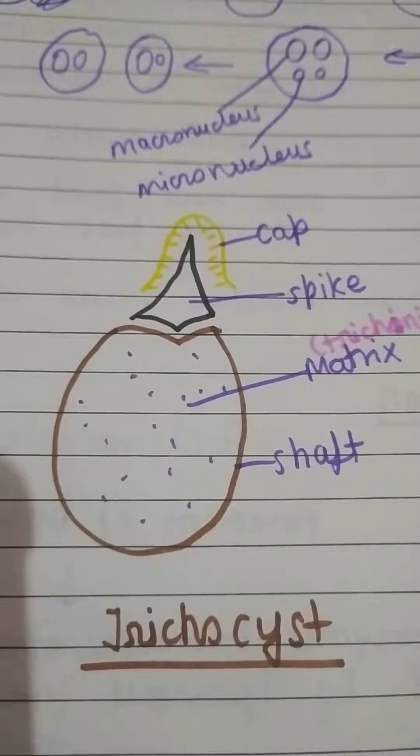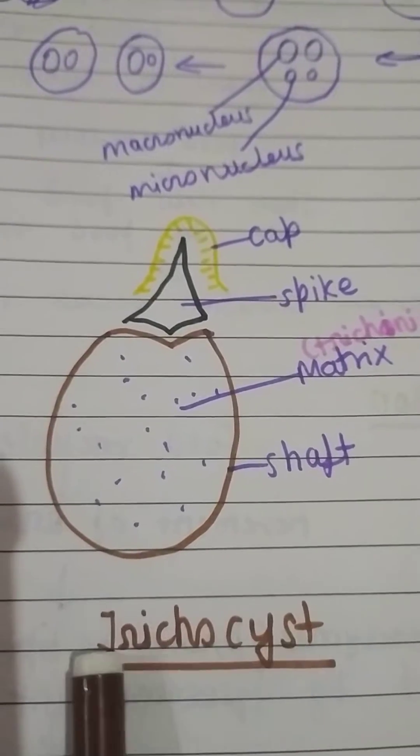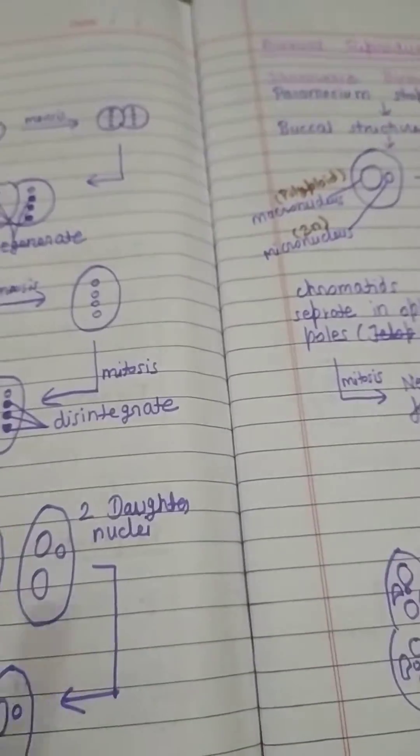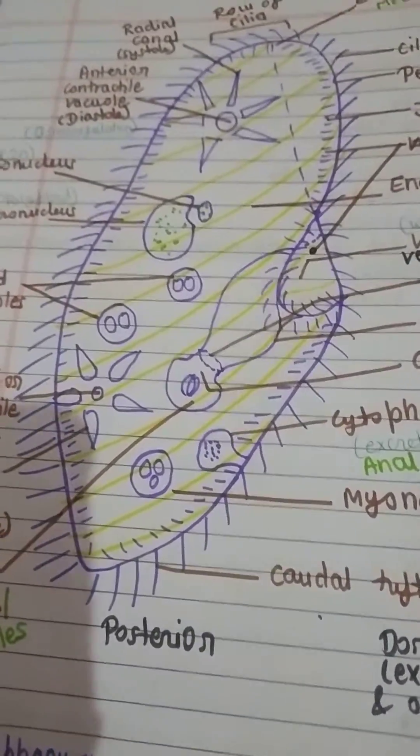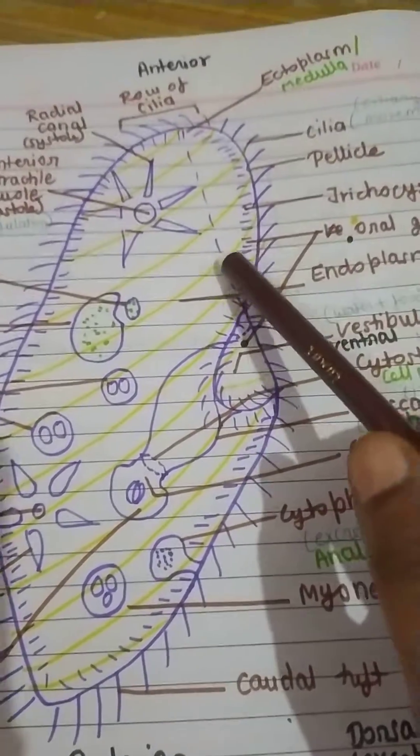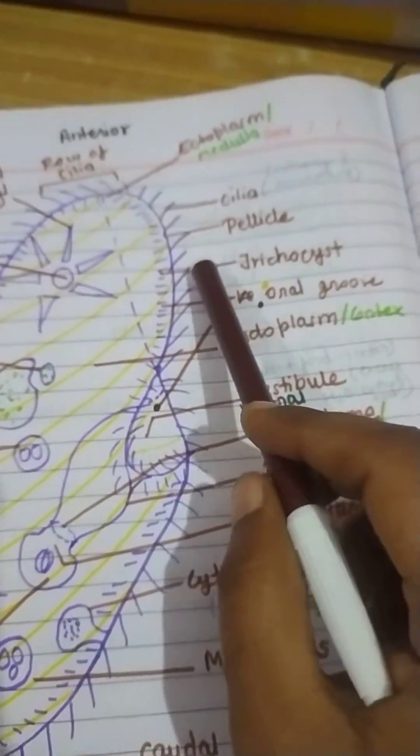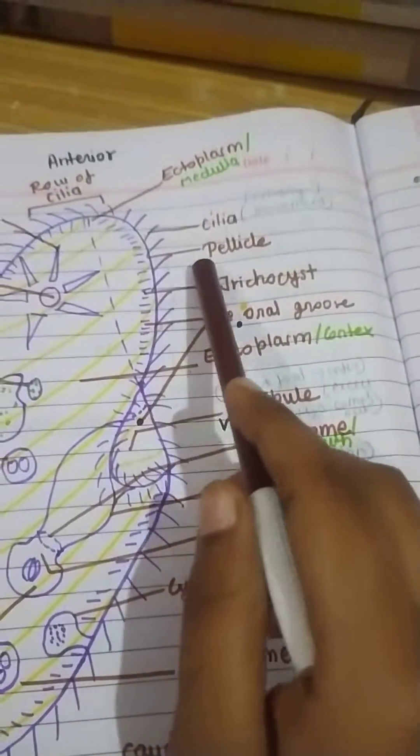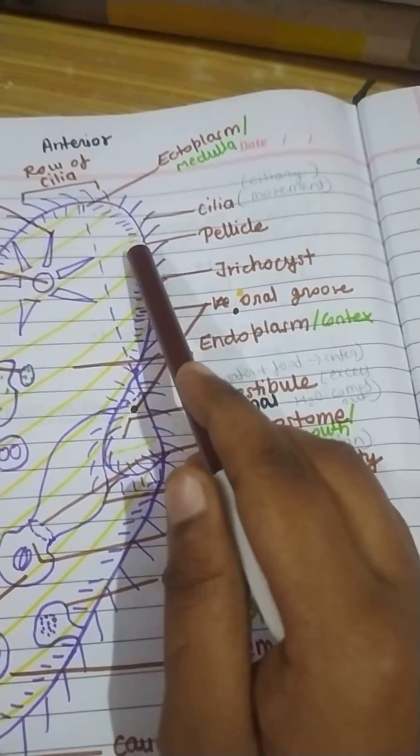Today I am going to tell you about what is trichocyst and its diagram. I will show you in paramecium. Trichocyst is the layer which is present inside the pellicle. This is pellicle outer covering. First is cilia, then after cilia there is pellicle, after pellicle there is trichocyst.